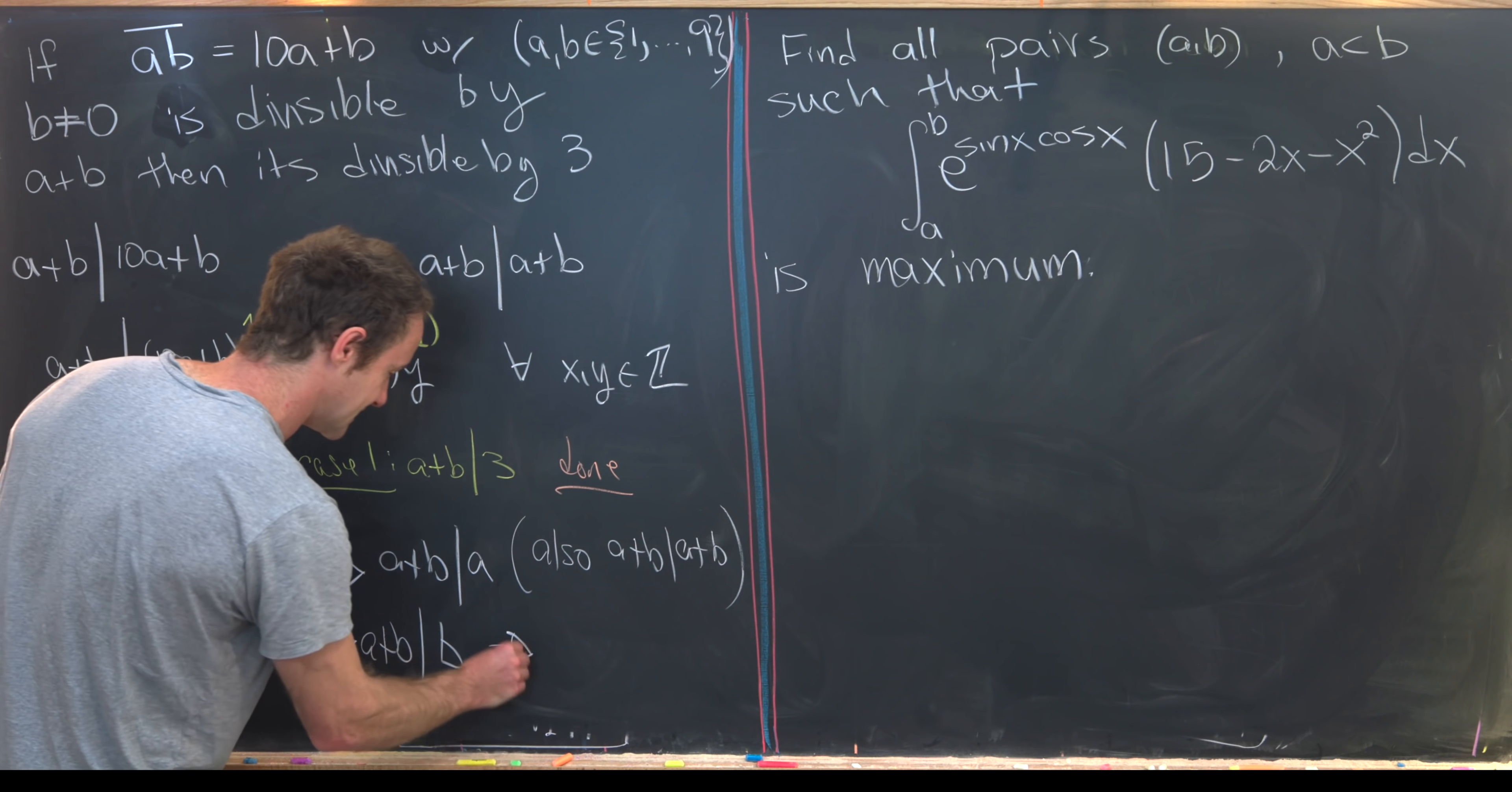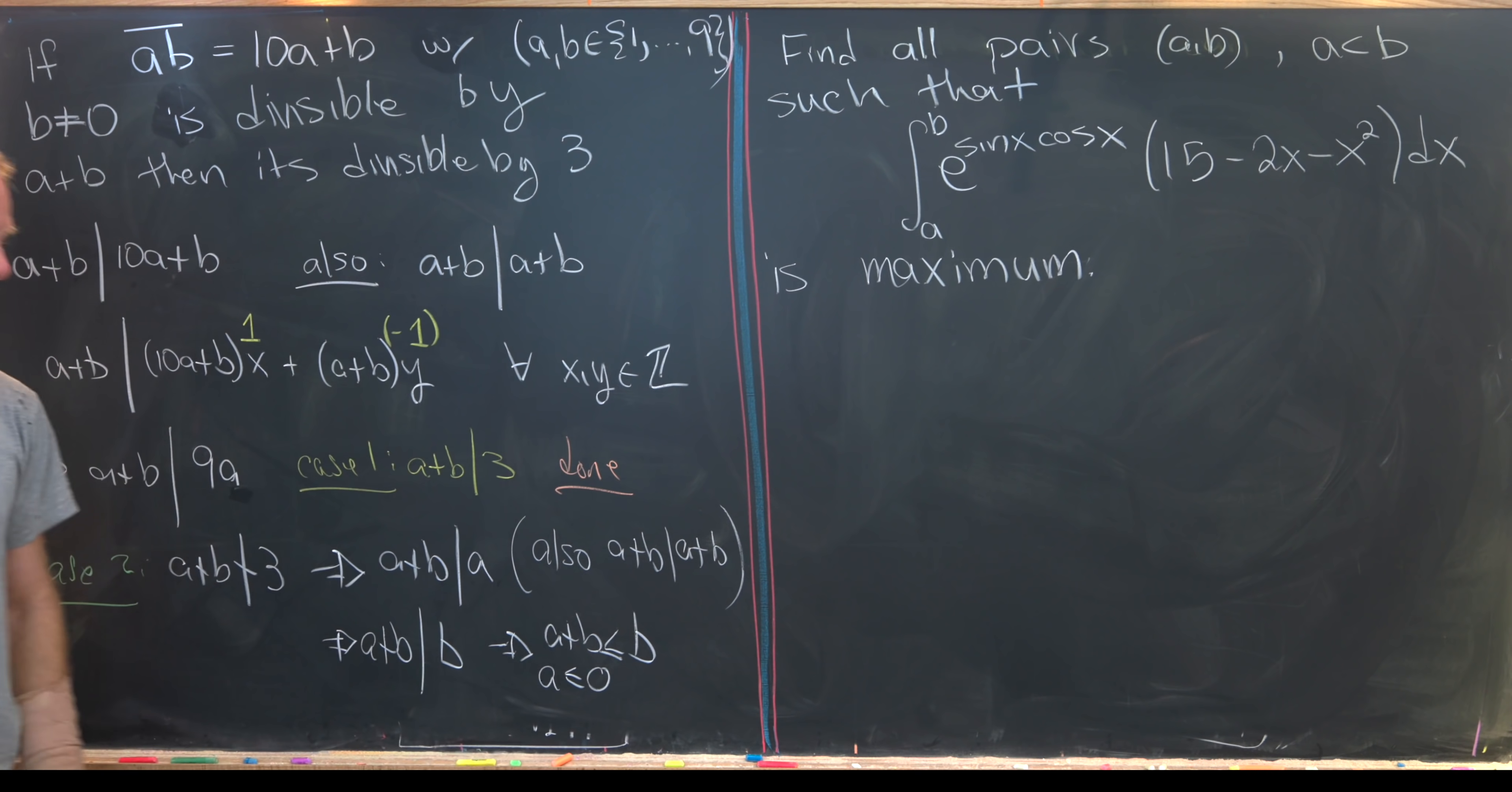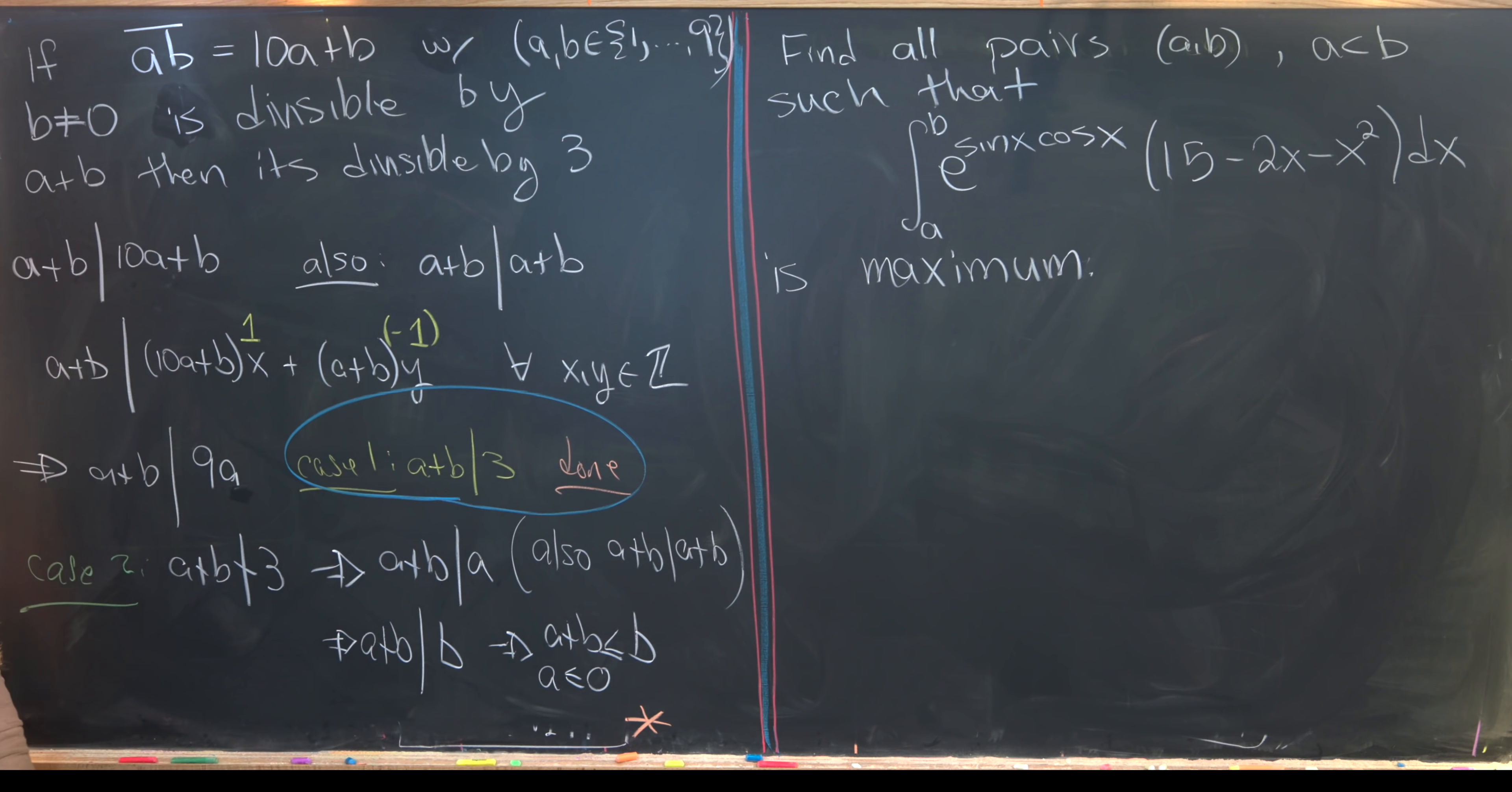But that tells us that a plus b is less than or equal to b, because divisibility implies that sort of inequality, especially if you're coming from this set of natural numbers, 1 through 9. Okay. But that means that a is less than or equal to 0. But notice that's impossible because we've assumed up here that a is between 1 and 9. So that leads us to a contradiction. So that means the only case that is possible is that a plus b divides 3, which means we're done.